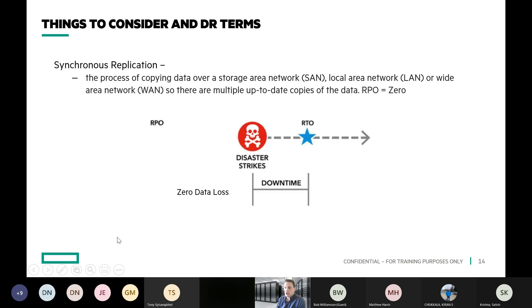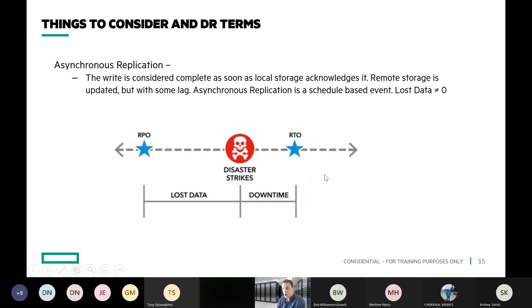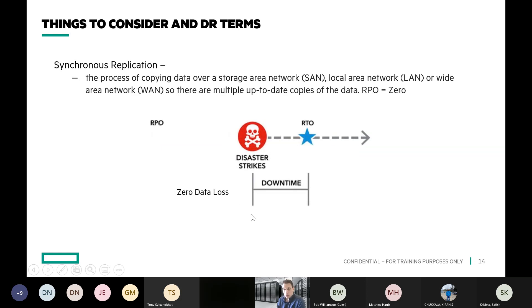When you do synchronous replication — meaning everything written to one place is also written to another and they're in sync — like in our Pure Persistence solution, you can drive your RTO down very low. Your RPO is going to be zero because you've got a real-time copy of your data in both places. Your failover from one to the other dictates your RTO, which can sometimes be instantaneous — so RTO is zero — or it might take five minutes or an hour, but you lost no data because you're always synchronously replicating.